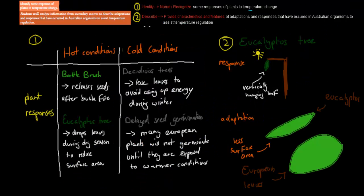The last dot points cover plant responses to temperature change. You need to know plant responses for both hot and cold conditions. For hot conditions: the bottlebrush releases seeds after bushfires, and the eucalyptus tree will actually drop some of its leaves during really hot conditions to reduce surface area, which means less heating occurs.